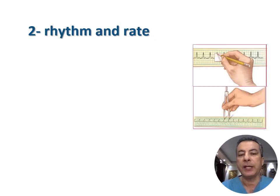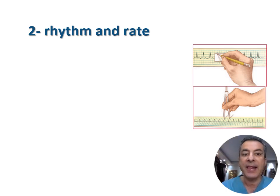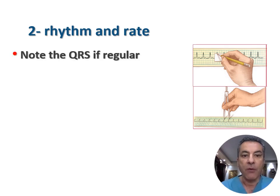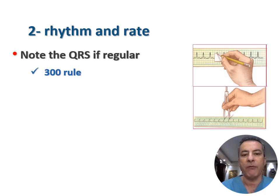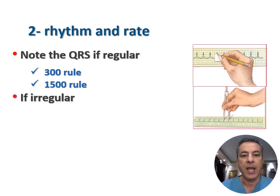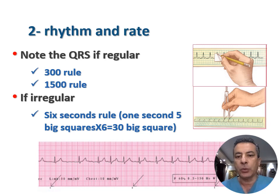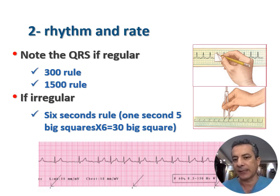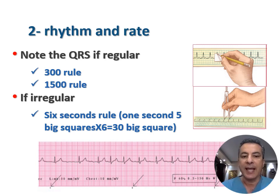The second step in ECG interpretation involves determination of rhythm and rate. Rhythm can manifest as regular or irregular, and the rate can be measured through one of three methods. For regular rhythms, two rules apply: the 300 rule (dividing 300 by the number of big squares between consecutive events) and the more precise 1500 rule (dividing 1500 by the number of small squares between consecutive events). For irregular rhythms, the six-second rule is applied by counting events in 30 big squares and multiplying by 10. These rules apply only when paper speed is 25 mm per second.